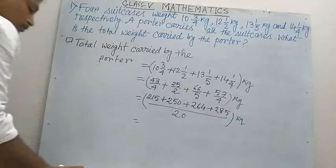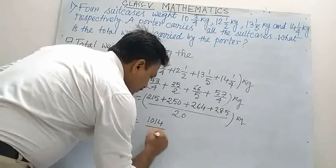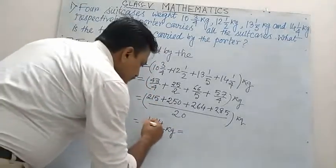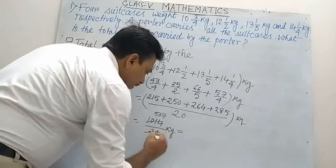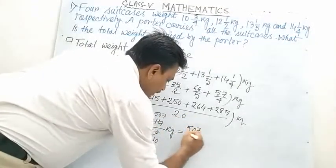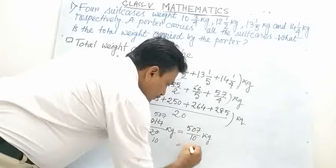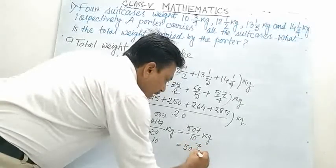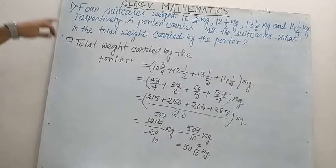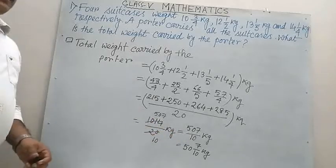Adding those up over 20: 215 plus 250 plus 264 plus 285 gives 1014 divided by 20 kg. Simplifying by dividing by 2 gives 507/10 kg. Converting to a mixed fraction, you get 50 whole 7/10 kg. So the total weight carried by the porter is 50 whole 7/10 kg.